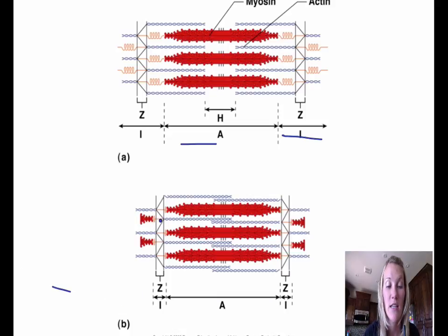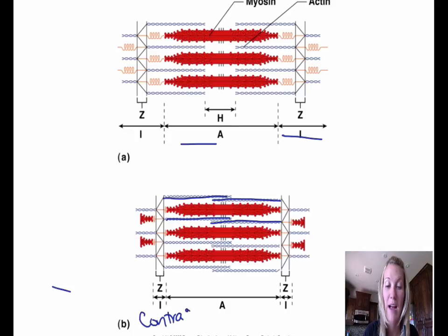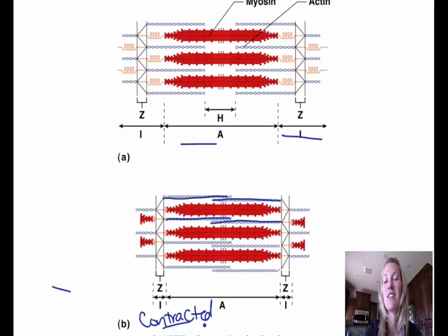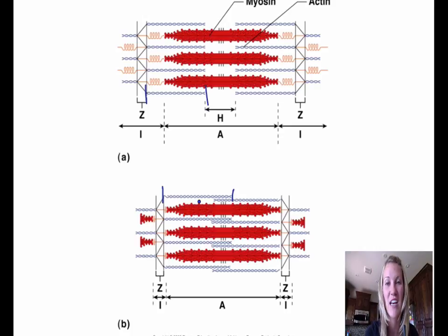In the second diagram, the actin filaments are now overlapping each other — that means the first diagram shows a relaxed sarcomere and the second shows a contracted state. You'll see questions about whether a contracted sarcomere is truly smaller. None of the filaments are actually smaller in size; the actin filaments are still the same length. Contracted is a misleading word because really the filaments are just sliding past each other — they're not actually getting smaller.